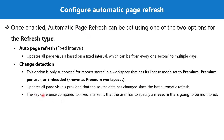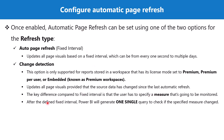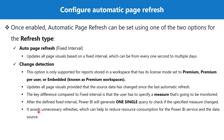The key difference between change detection and fixed interval is that the user has to specify a measure in the report that will be monitored. Once the defined interval has passed, Power BI will generate one single query to check if the specified measure has changed or not.